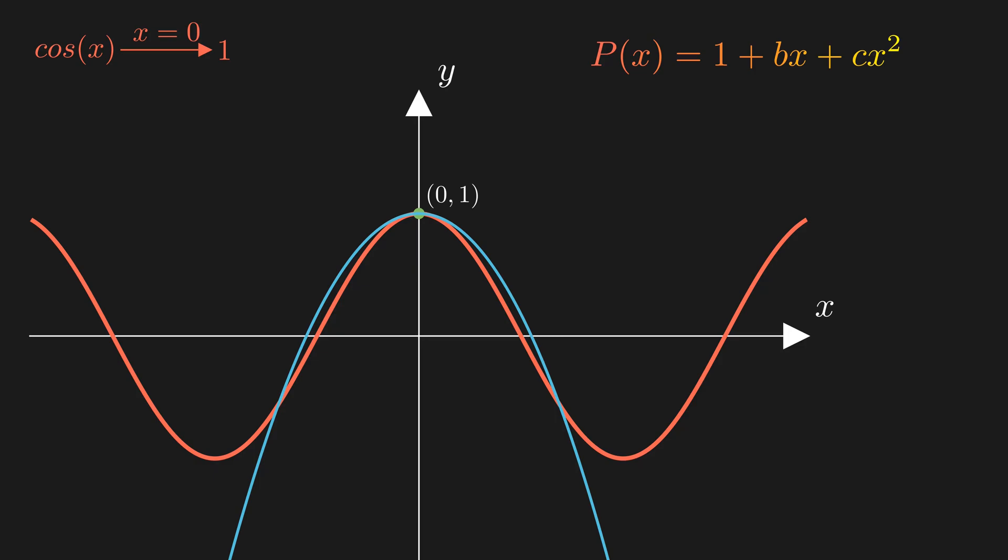But if we can also make the slope of our polynomial match the slope of cosine at that point, they'll resemble each other more closely. Otherwise, the polynomial just drifts off too much to the sides. The derivative of cosine x is negative sine x, which equals 0 at x equals 0. So it is a perfectly flat line.